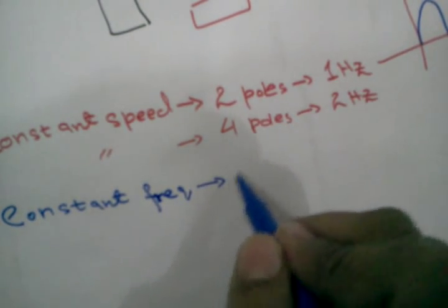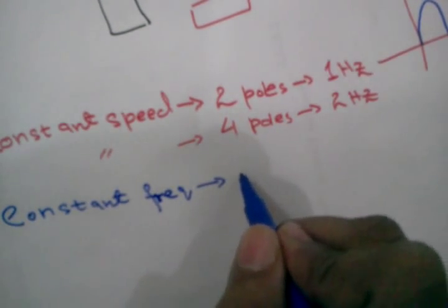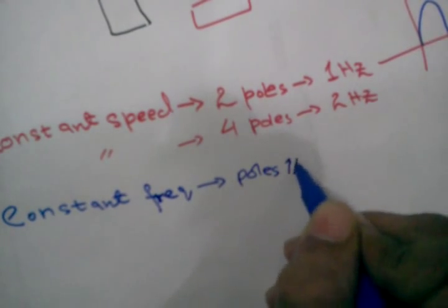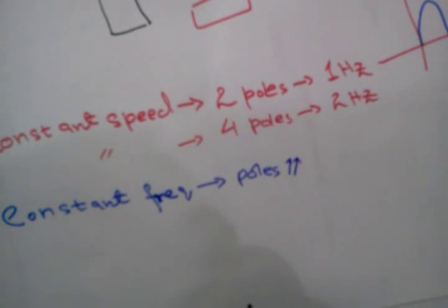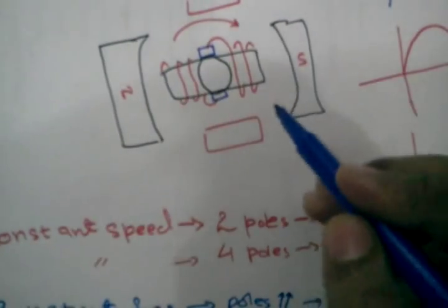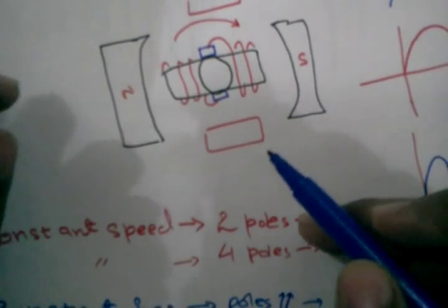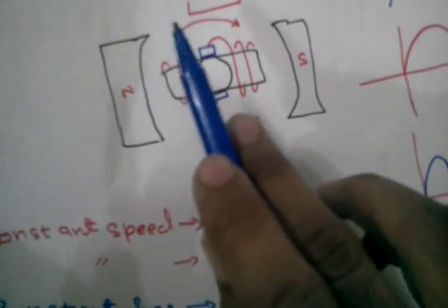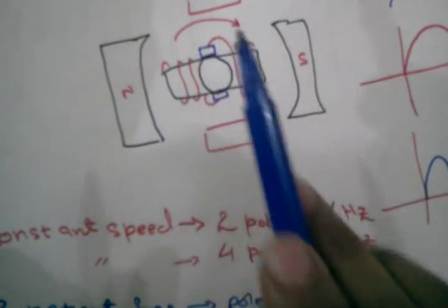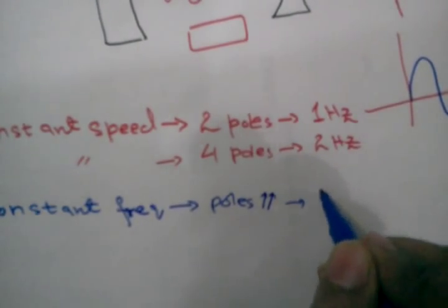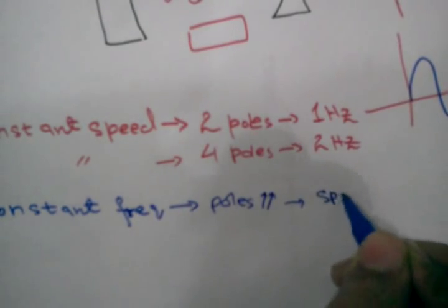And if we increase the number of poles, so the number of poles are increased and if the frequency is constant, the motor will not rapidly move. It will slowly change its poles because the frequency is constant here. So for this point, the speed will be low.